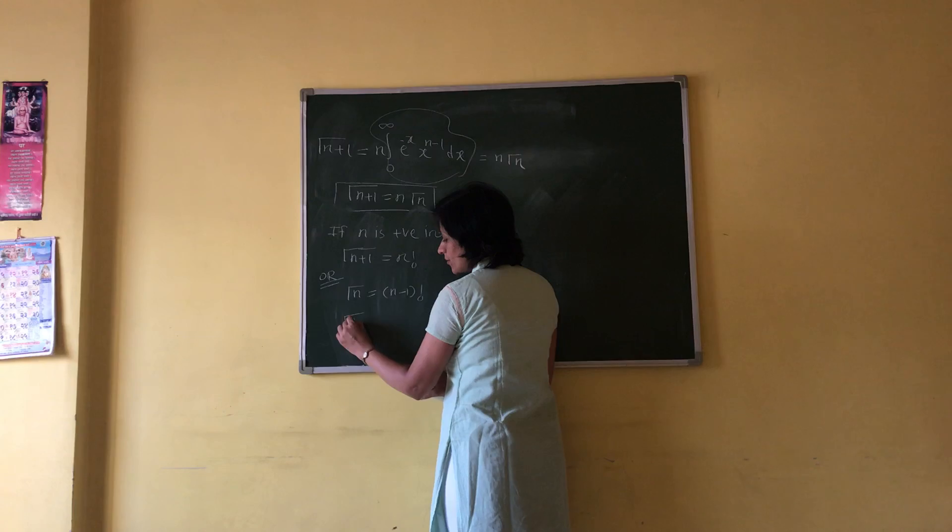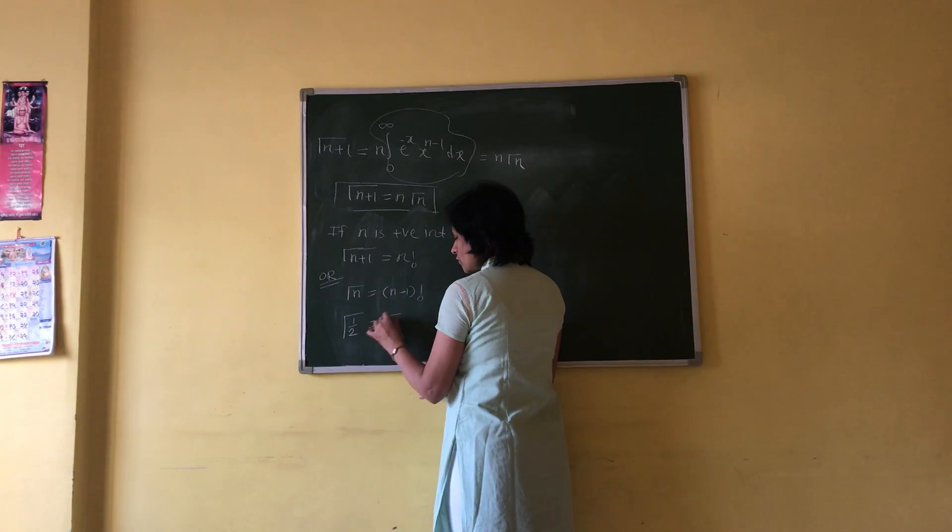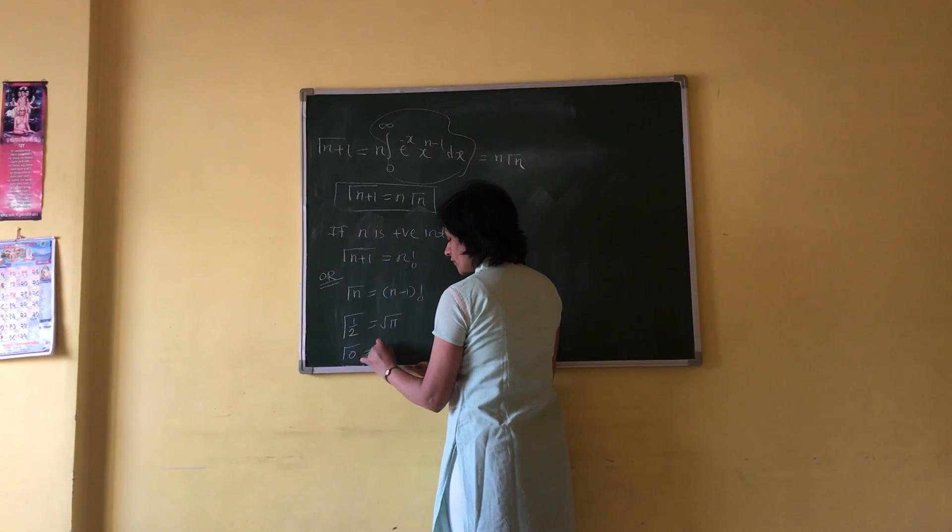The next property is gamma of 1 by 2 equals root pi.